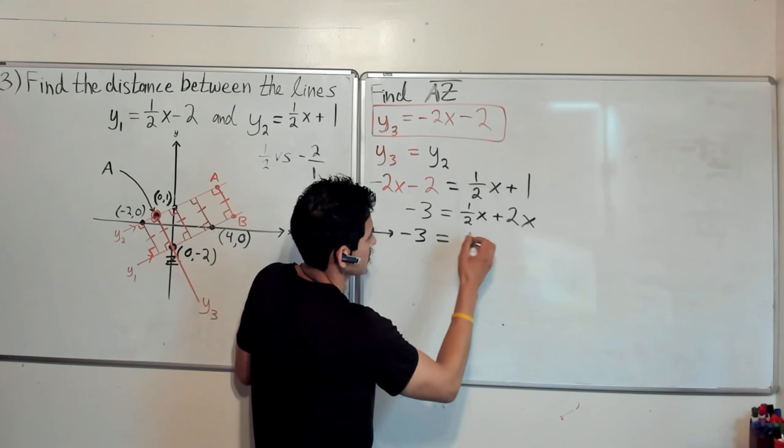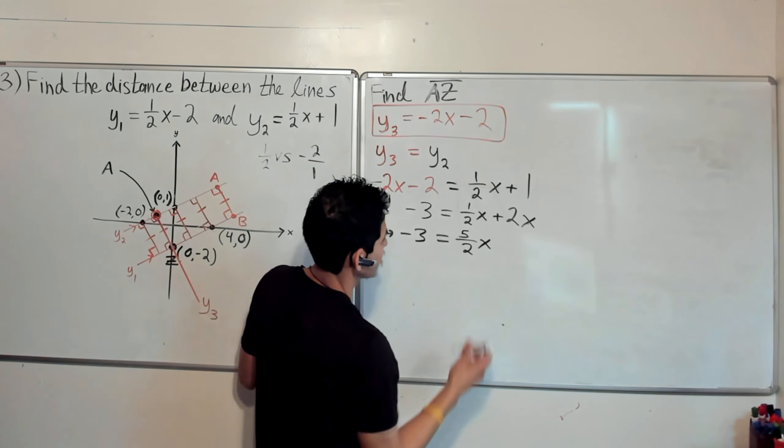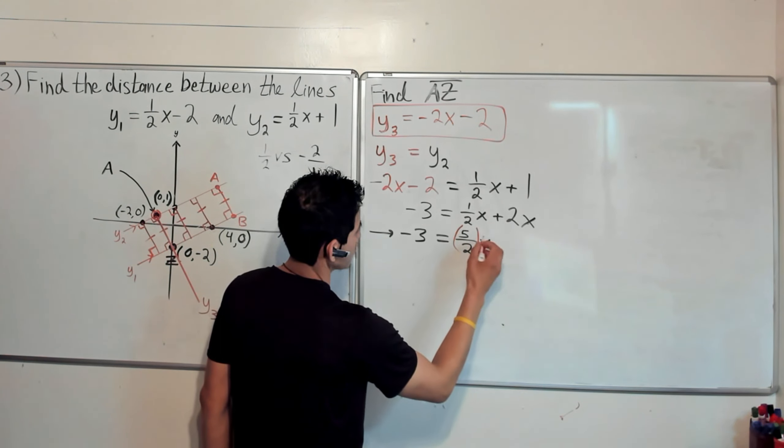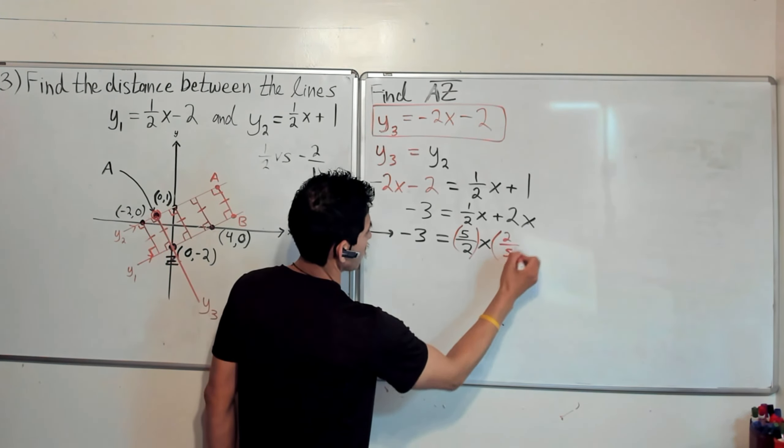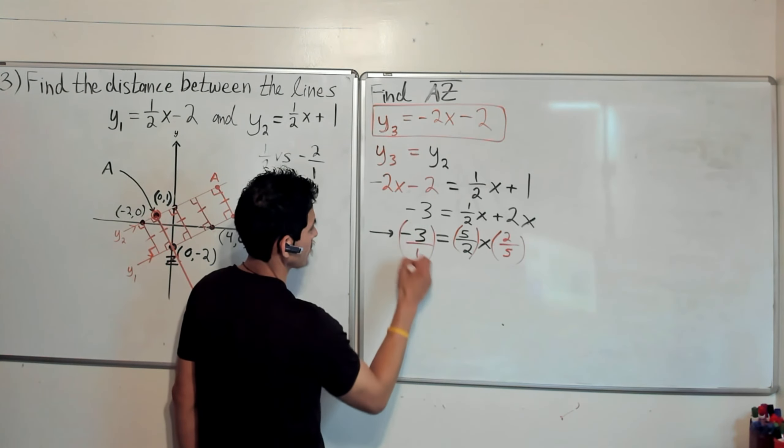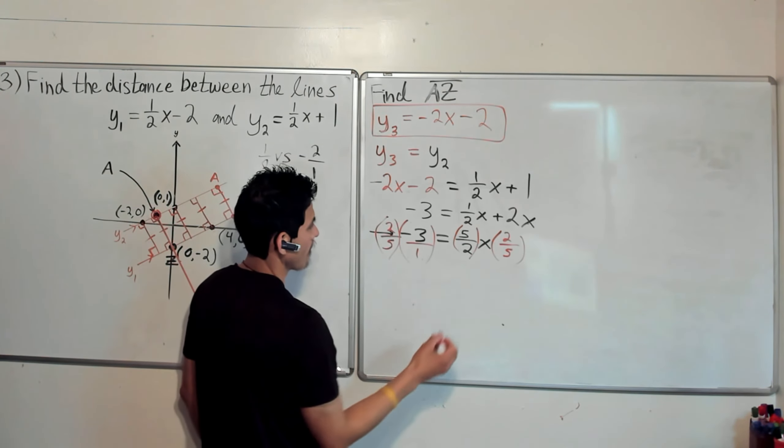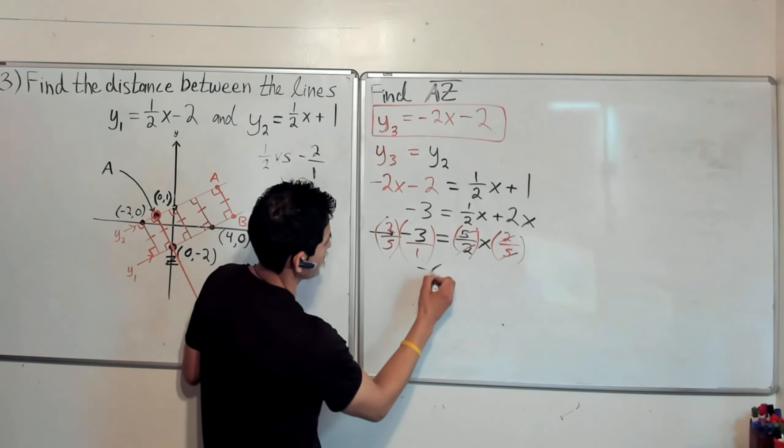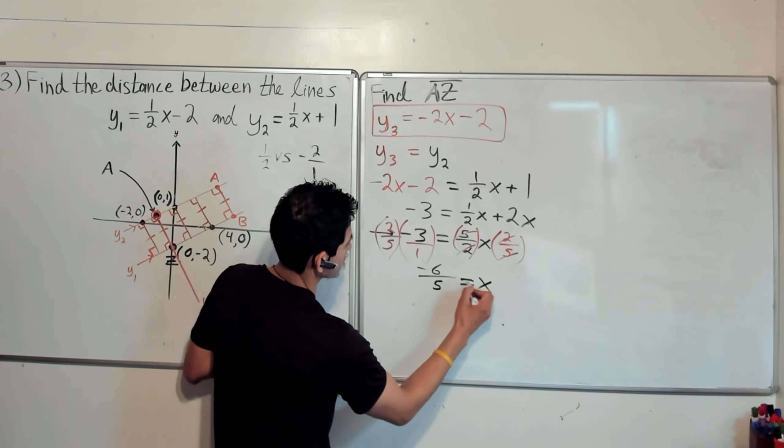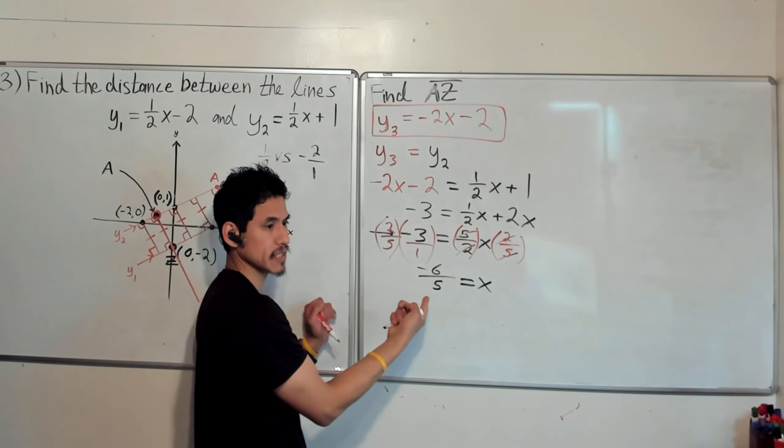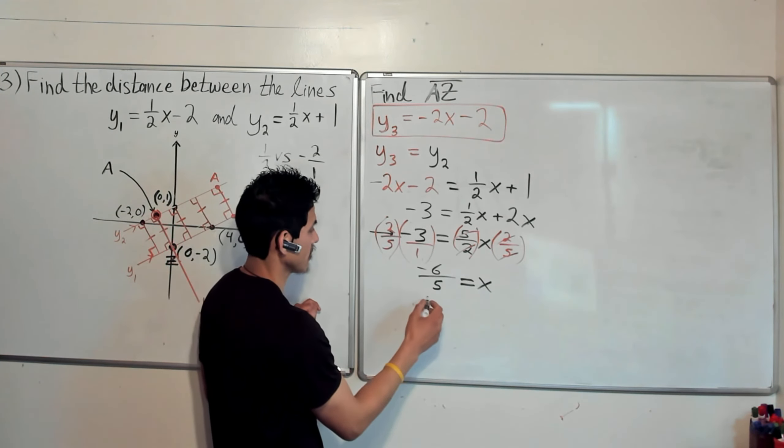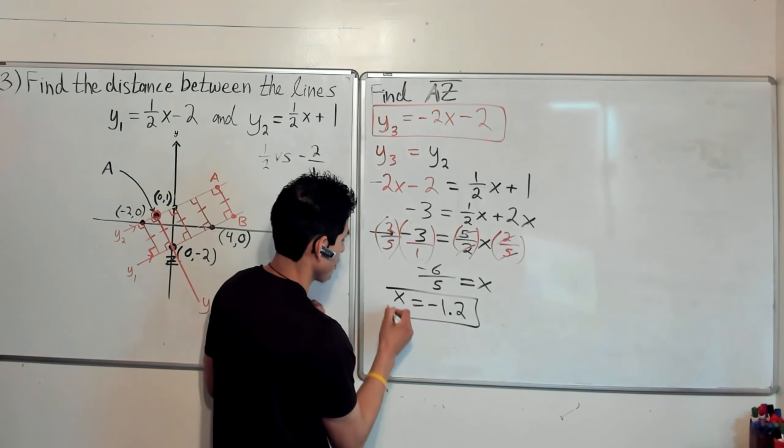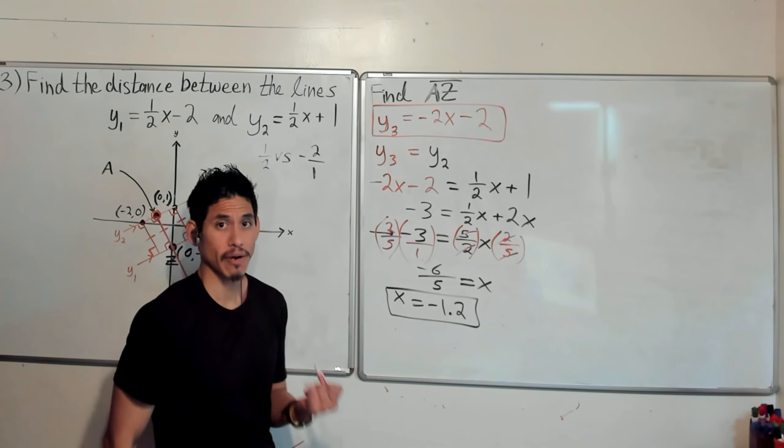So we get -3 = 2.5x. 2x is just like 4/2x. So 1/2x + 2x is 5/2x. To get rid of this 5/2, remember we're going to multiply both sides by 2/5. Because -3 is the same as -3/1. So multiplying both sides by 2/5. Now cancel that. And then we get -6/5 = x. And as long as it's a decimal that doesn't repeat, it's not an irrational decimal. We can use a decimal and change x into -1.2. Okay, so now x is -1.2.